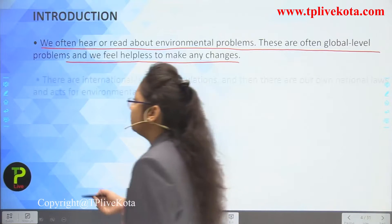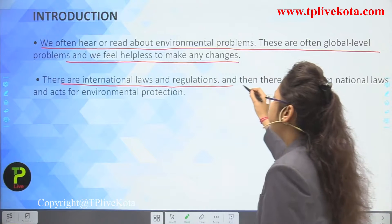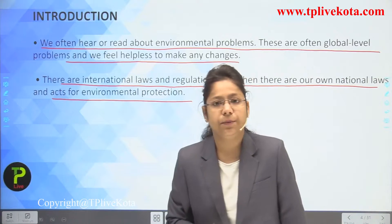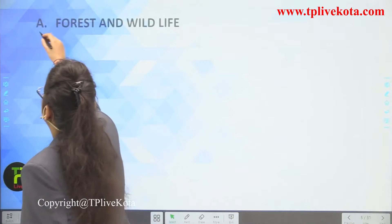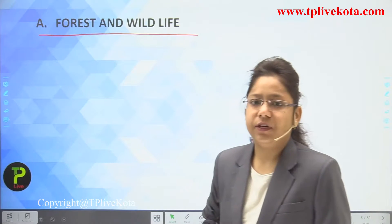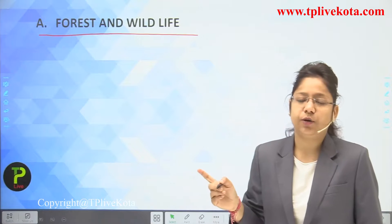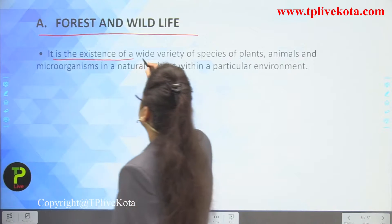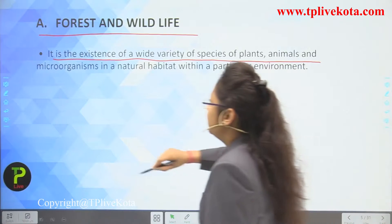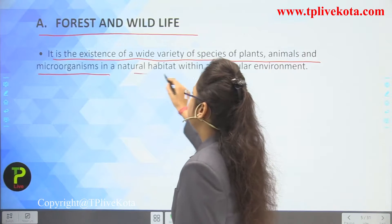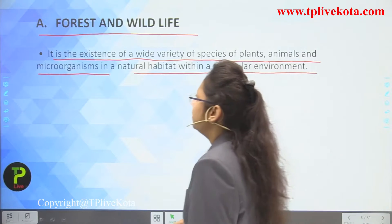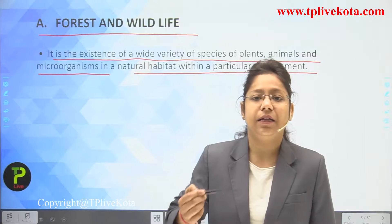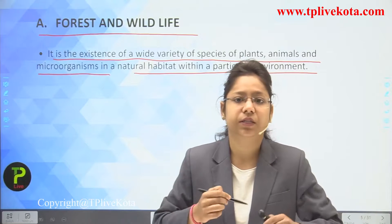There are international laws and regulations, as well as national laws for environmental protection. Now, regarding forest and wildlife: it is the existence of a wide variety of species of plants, animals, and microorganisms in a natural habitat within a particular environment. The existence of these species of plants, animals, and microorganisms within a single habitat is what we know as a forest.